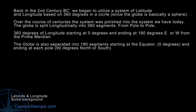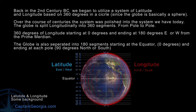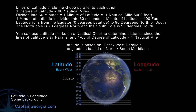Back in the second century, we began to utilize a system of latitude and longitude based on 360 degrees in a circle. Latitude goes north-south from the equator to the poles. We have time zones based on longitude, which goes from pole to pole, starts at zero at the prime meridian, goes around the earth east or west to the international dateline, which is the far side of the prime meridian. That gives us this grid system on the earth, and we work it in degrees, minutes, and seconds.